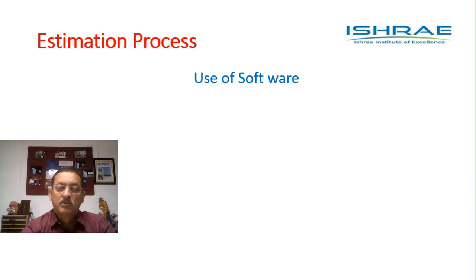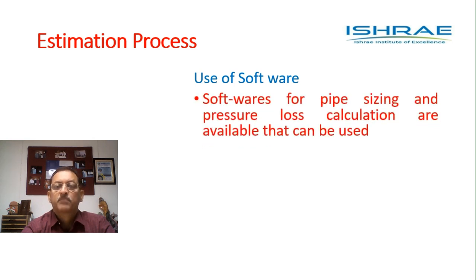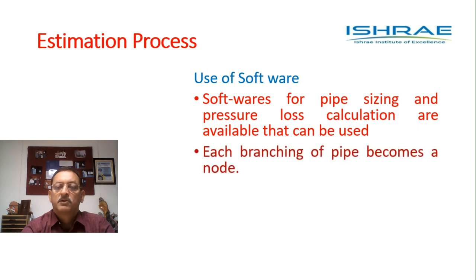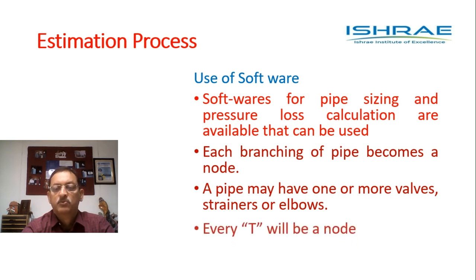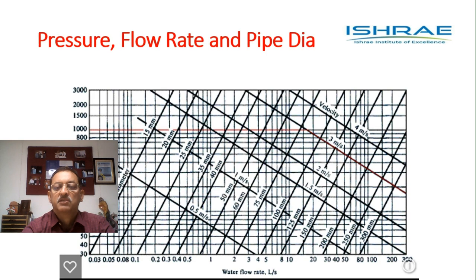A pipe may have one or more valves, strainers, or elbows. There are softwares like PipeNet which help in sizing the pipes, estimating pressure loss, and selecting the most suitable pump from a range of pumps. Each branching of the pipe becomes a node, but valves, strainers, or elbows within a pipe section do not necessarily become nodes. Every T-piece becomes a node because every T has a branching taking place.